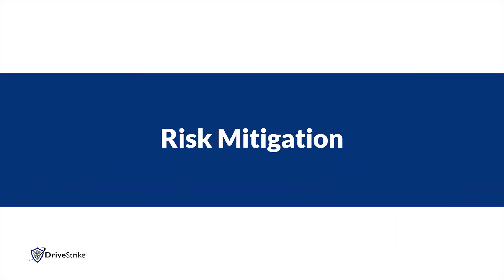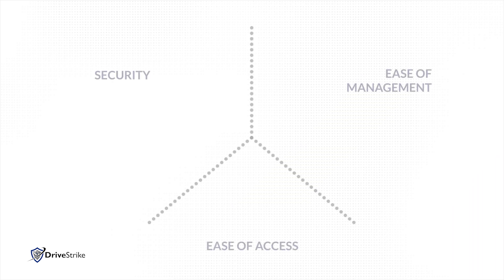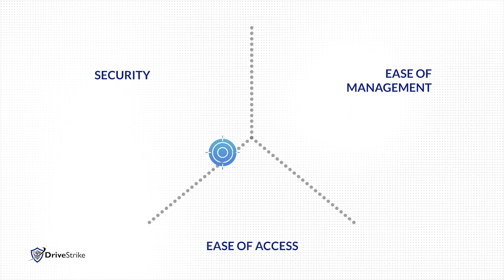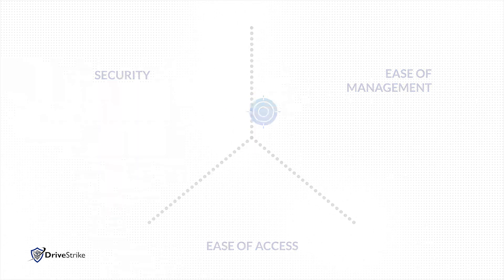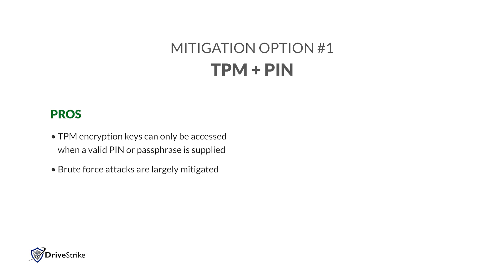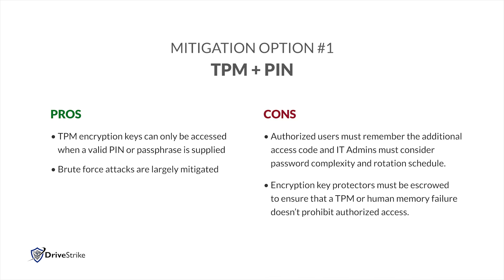How do you protect against this type of security risk? Each mitigation presents a clear trade-off between sufficient security and user convenience of access. Here is a quick list of pre-boot mitigations and the challenges each one introduces. TPM plus PIN: this ensures TPM encryption keys can only be accessed when a valid PIN or passphrase is supplied, and brute force attacks are largely mitigated, since removal of the drive would require a 48-digit key authentication. The downside is that authorized users must remember the additional access code, and IT admins must consider the password complexity and rotation schedule that meets their security posture needs.